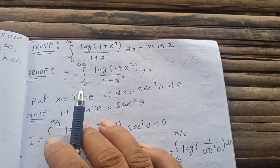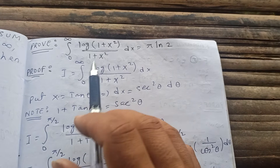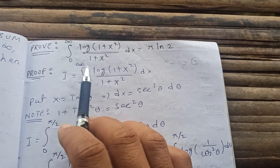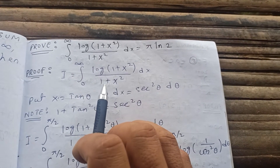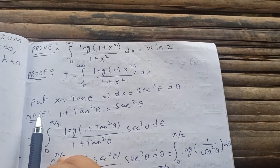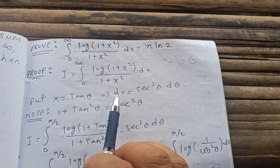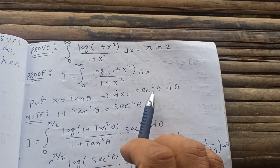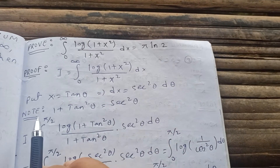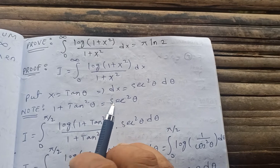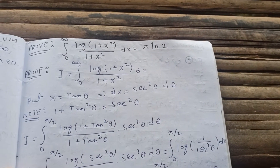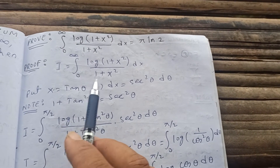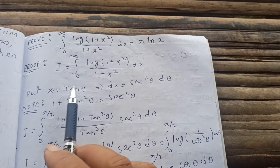Let's start proving it. Let me call the integral I, which is the integral from 0 to infinity of log(1 + x²) / (1 + x²) dx. Now putting x equal to tan θ, differentiating gives dx = sec²θ dθ, and we know that 1 + tan²θ = sec²θ.